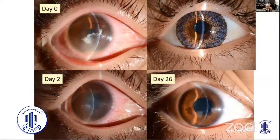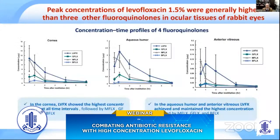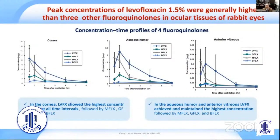For severe corneal infection cases, we almost always use Cravit 1.5 percent as the first choice in Japan. Looking at PK data in India: the peak concentration of levofloxacin 1.5 percent is generally higher than three other fluoroquinolones including gatifloxacin and moxifloxacin, both in the cornea and anterior vitreous.